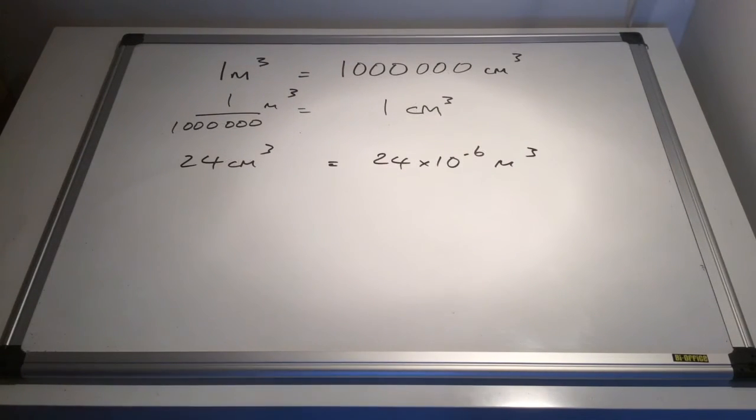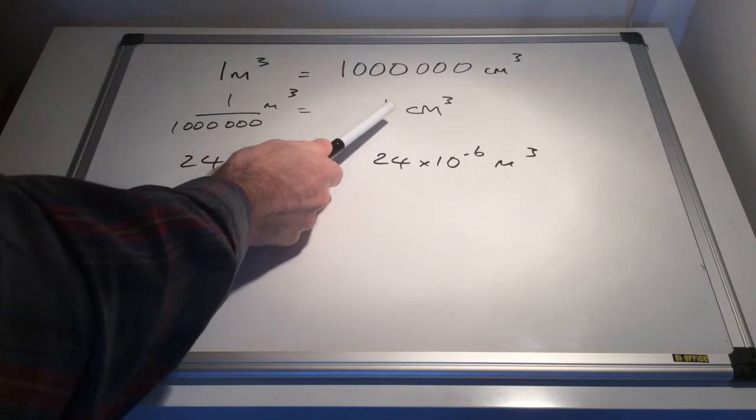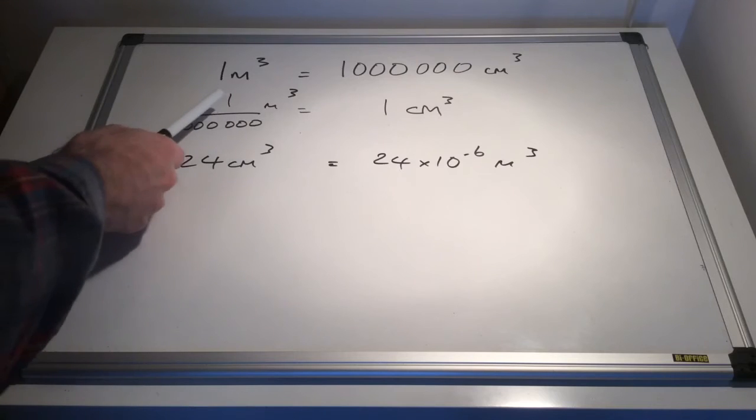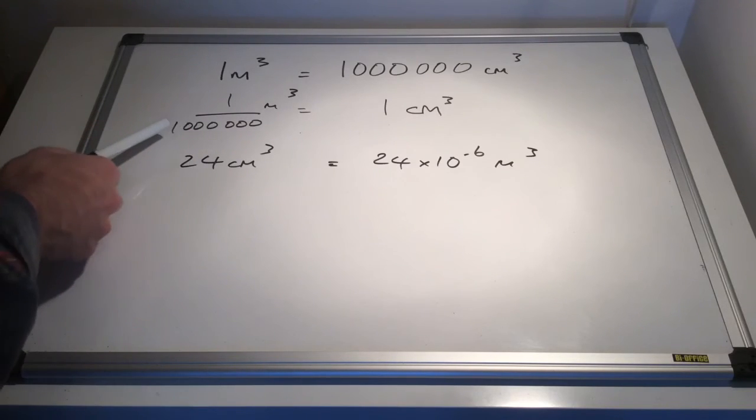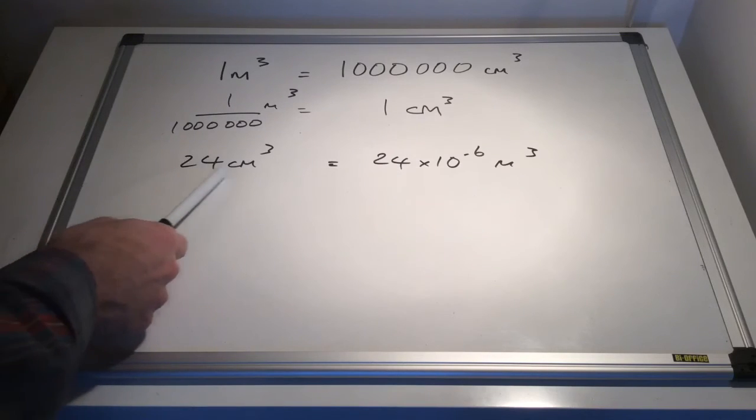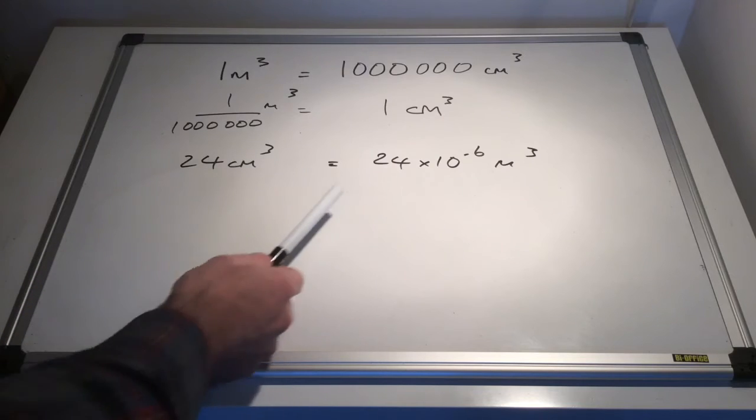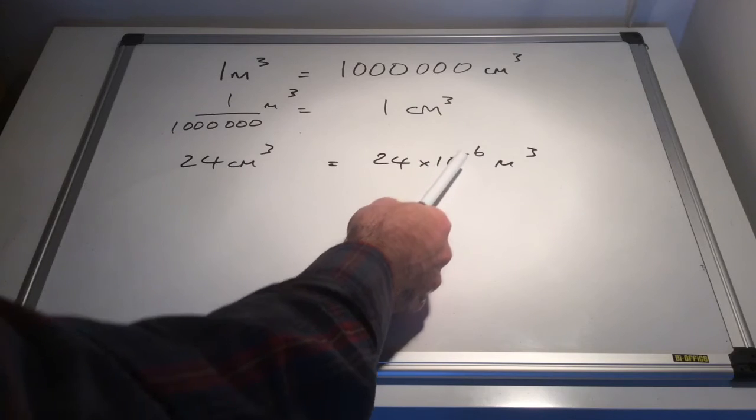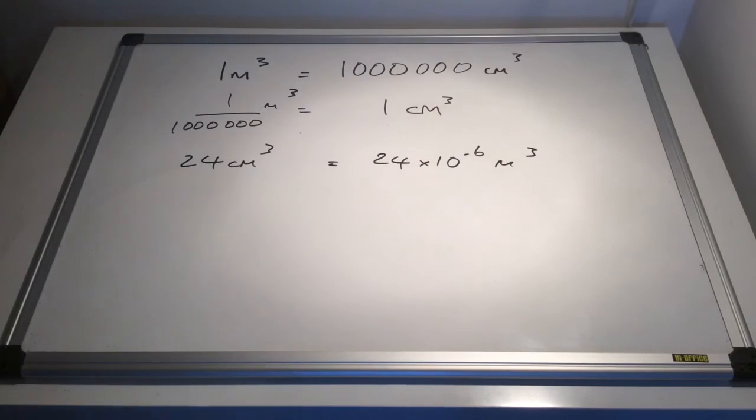And I've done exactly the same but now for cubic centimetres. So 1 cubic metre is actually equivalent to 1 million cubic centimetres. So 1 cubic centimetre is obviously a lot smaller than a cubic metre, so 1 divided by 1 million cubic metres. So therefore, 24 centimetres cubed is 24 divided by 1 million cubic metres. And again, I just put the 10 to the minus 6 to get it into cubic metres.